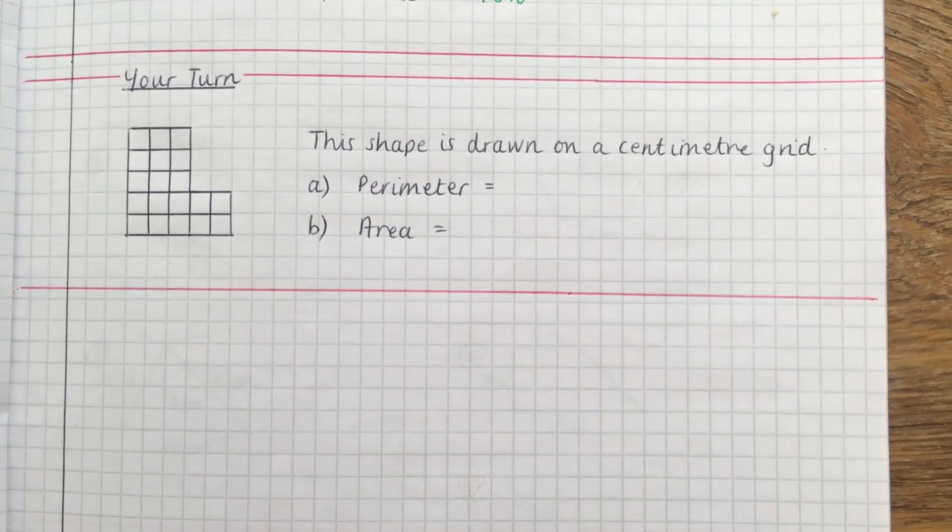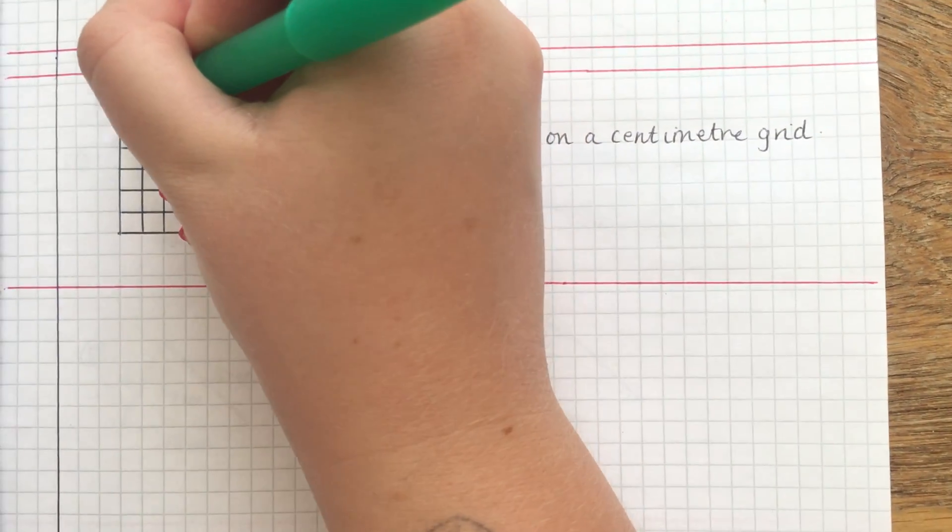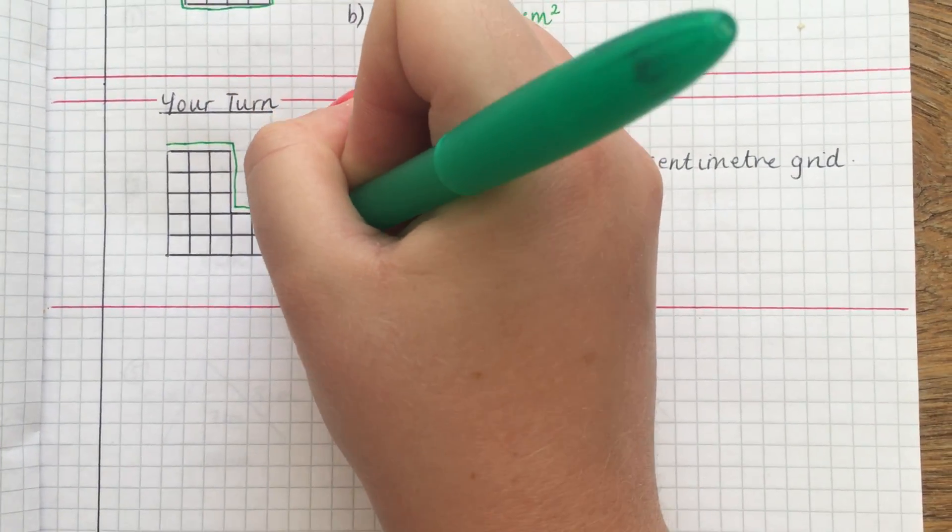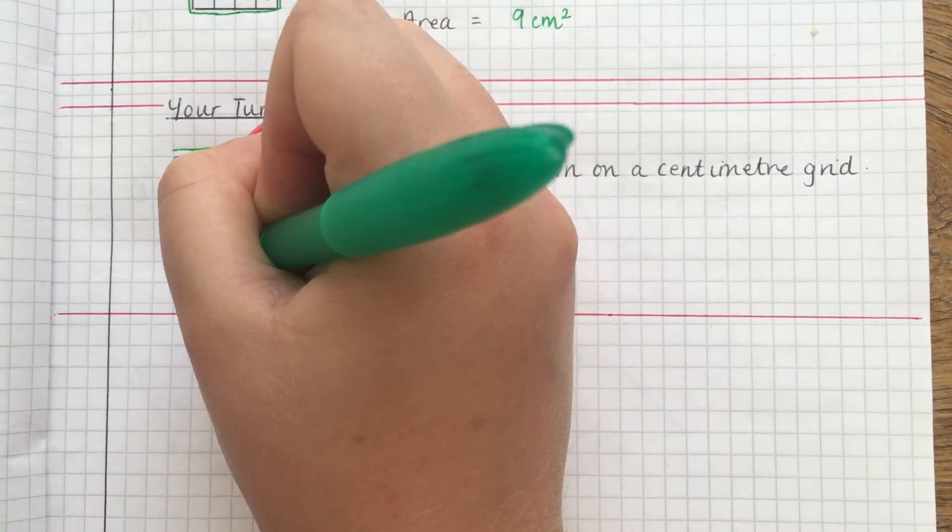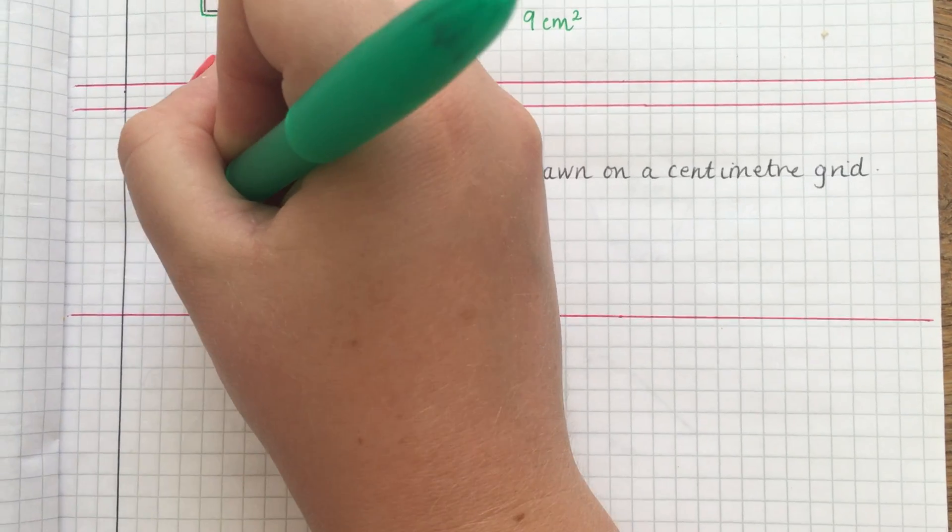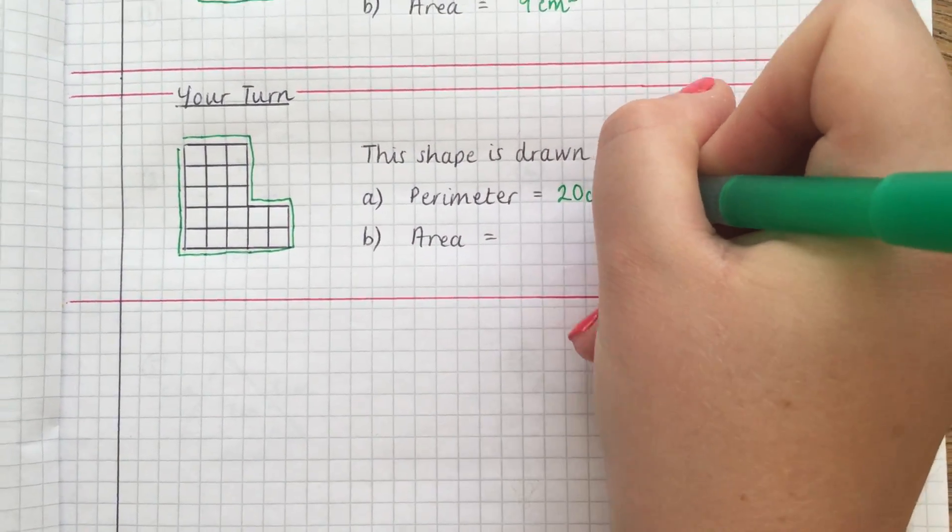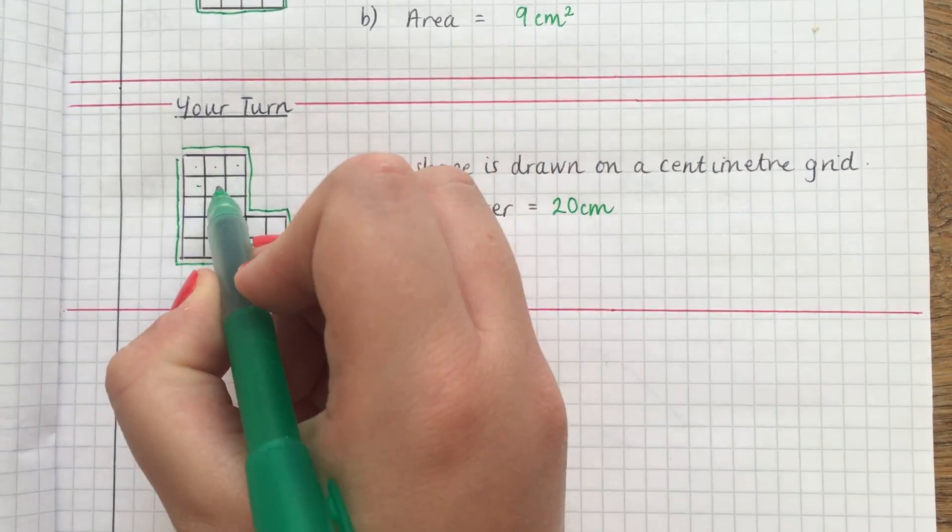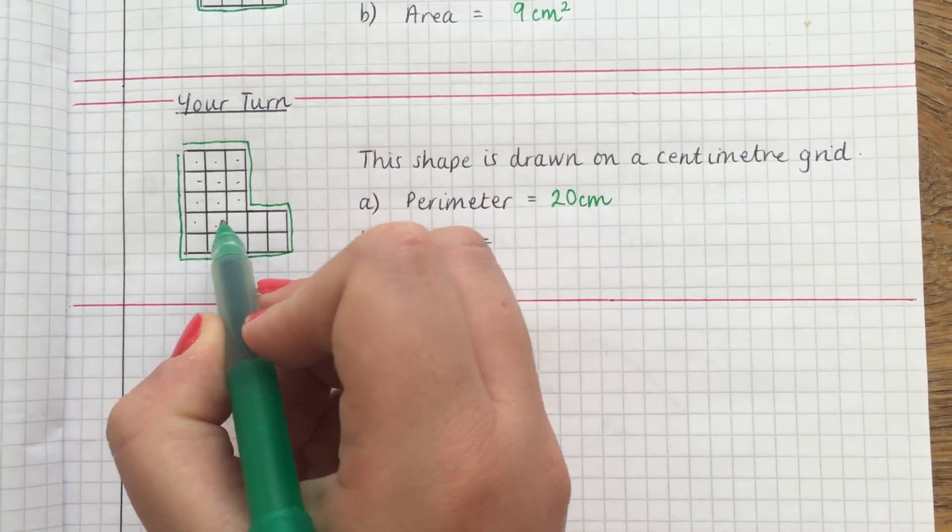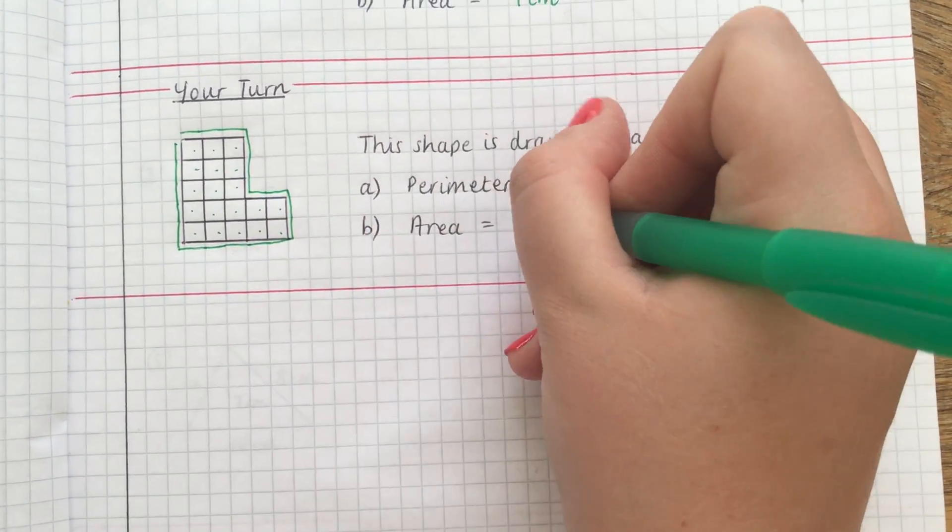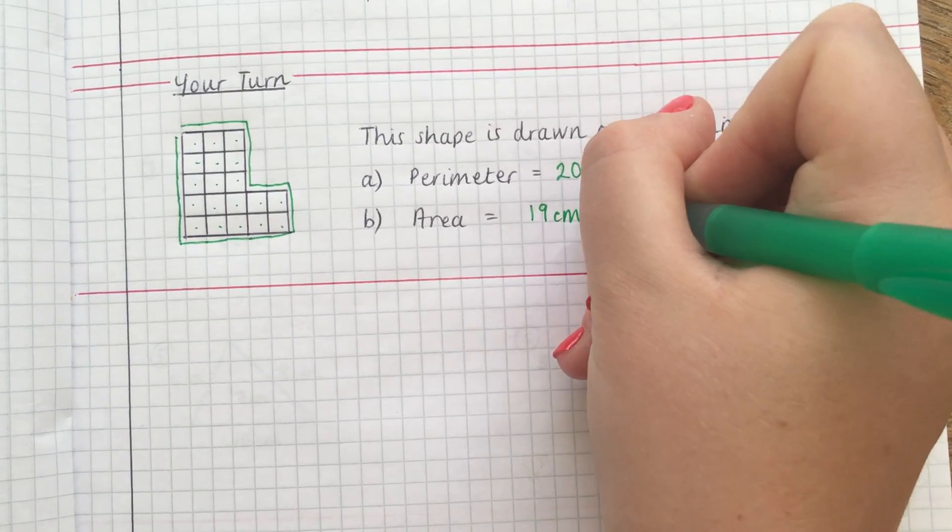Okay, so for the perimeter of the shape you go along the edges: one, two, three, four, five, six, seven, eight, nine, ten, eleven, twelve, thirteen, fourteen, fifteen, sixteen, seventeen, eighteen, nineteen, twenty. So the perimeter is twenty centimeters. And the area: one, two, three, four, five, six, seven, eight, nine, ten, eleven, twelve, thirteen, fourteen, fifteen, sixteen, seventeen, eighteen, nineteen centimeters squared.